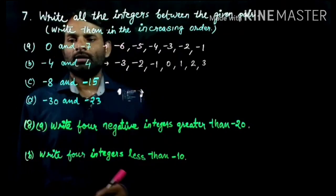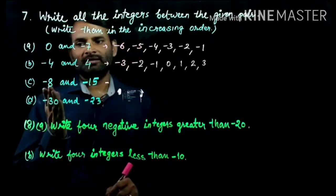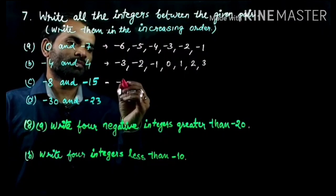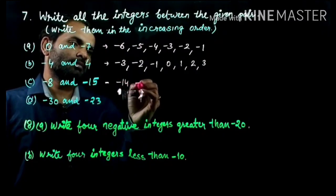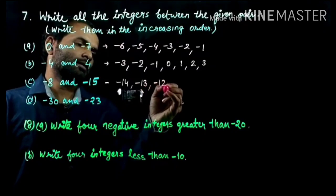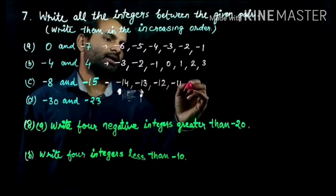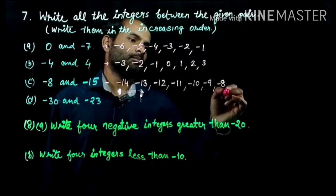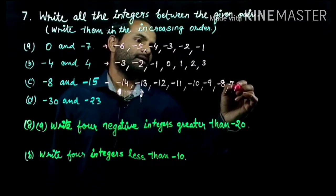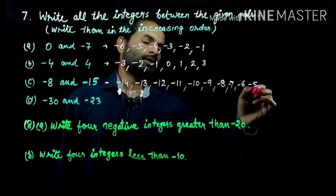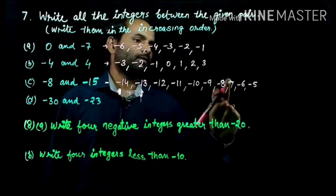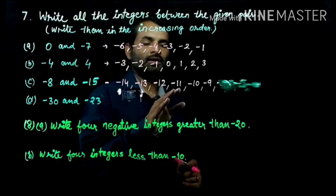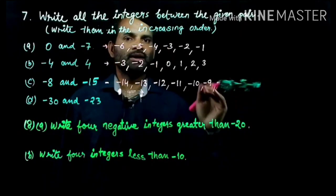Then minus 8 and minus 15. The smallest number is minus 15. So we write: minus 15, minus 14, minus 13, minus 12, minus 11, minus 10, minus 9, then minus 8. You write only the numbers between them: minus 14, minus 13, minus 12, minus 11, minus 10, minus 9, then minus 8.